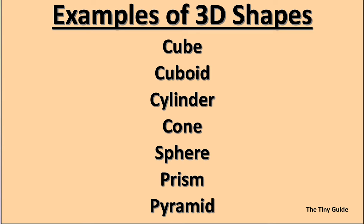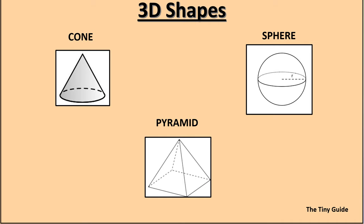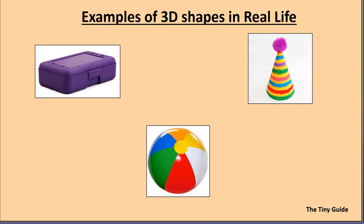Examples of 3D shapes are cube, cuboid, cylinder, cone, sphere, prism, and pyramid. Some 3D shapes are shown in the video for your reference.